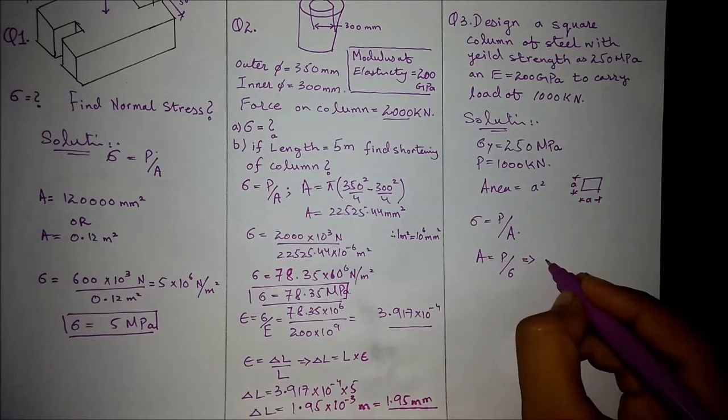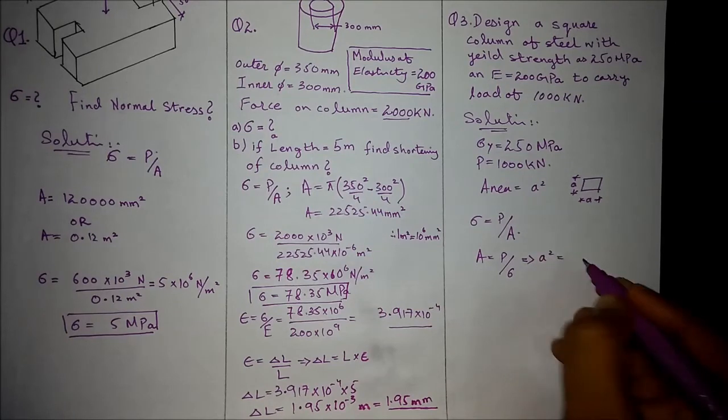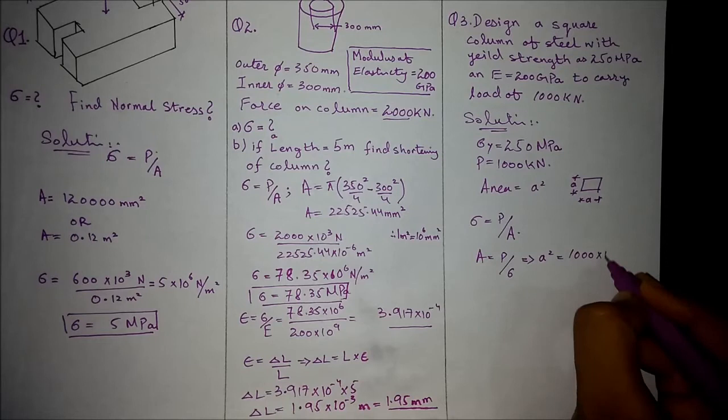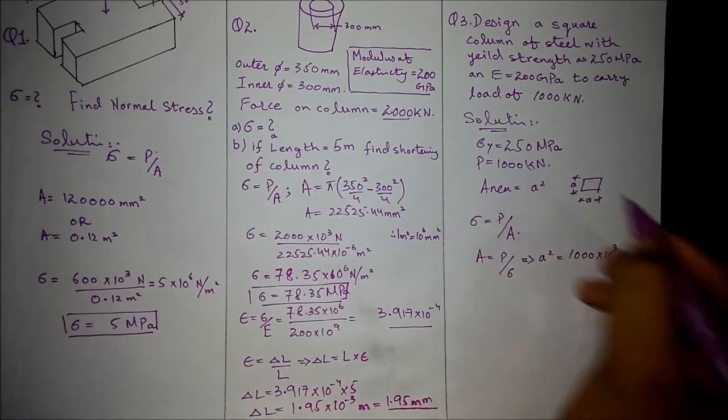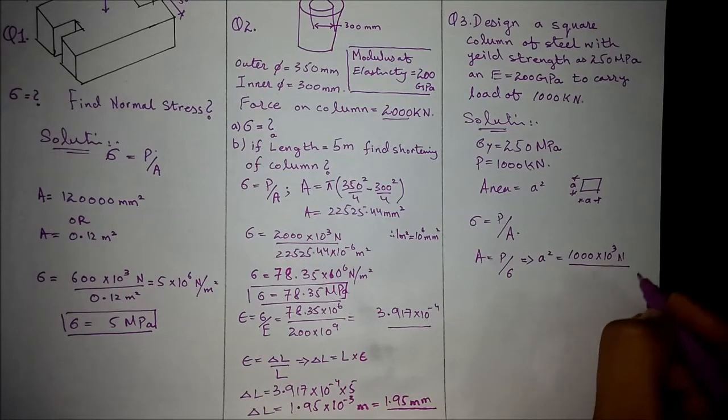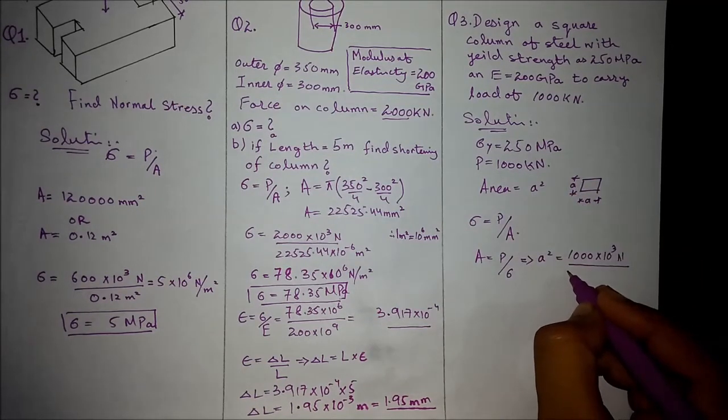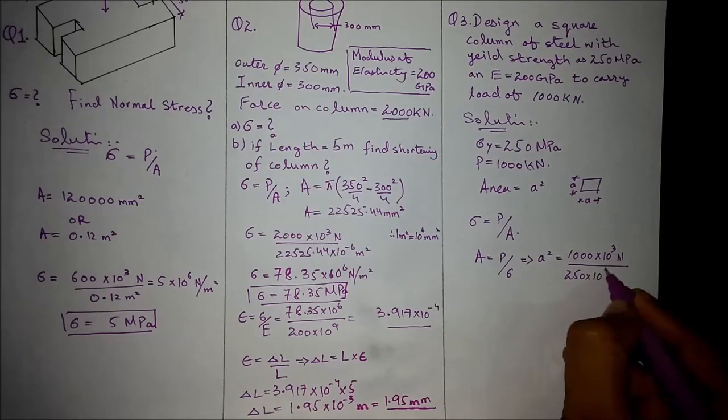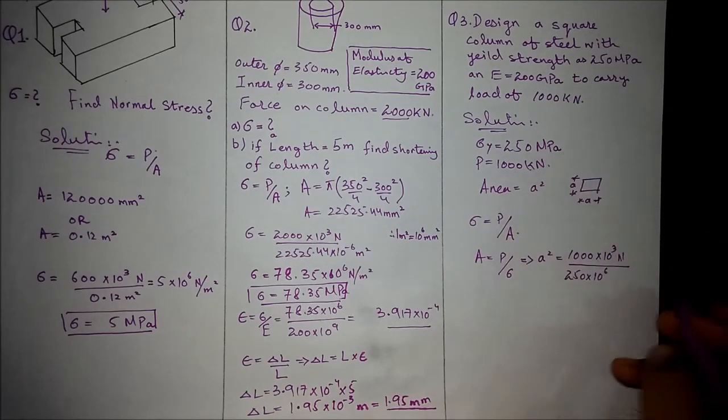Here we substitute for area as A square equals force is given as 1000 times 10^3 newtons, converting kilonewton into newton, over stress value 250 times 10^6. Mega represents exponent six.